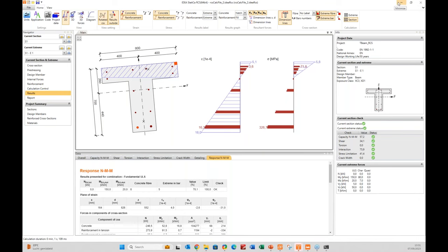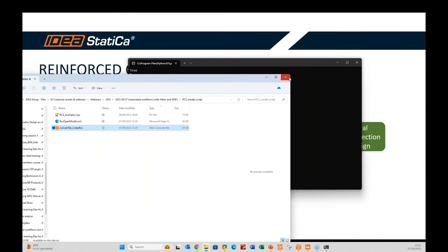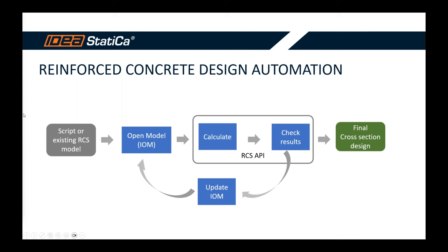The next step is to use analysis results as input to update the model and recalculate, optimizing the cross-section. Currently, updating an RCS file requires recreating it with a new IOM each time — a direct update API is in development. If you're interested in setting up such a workflow, you can contact IdeaStatica or Victor for assistance.